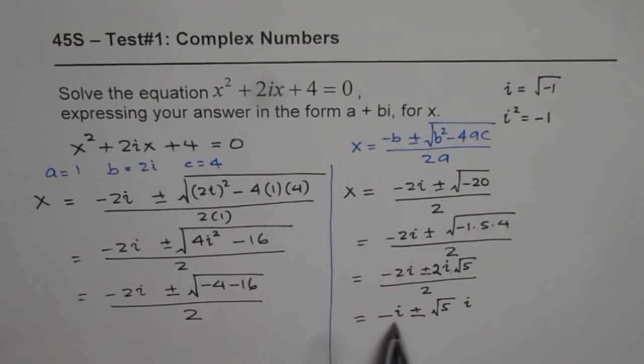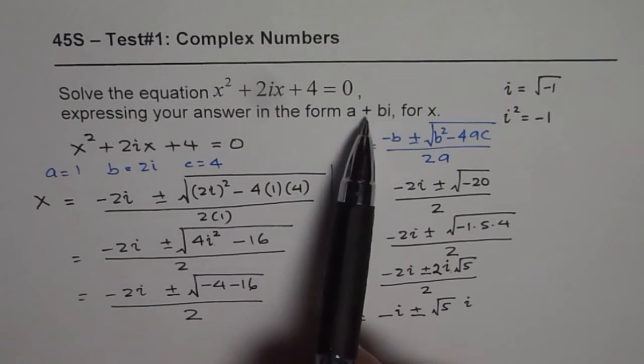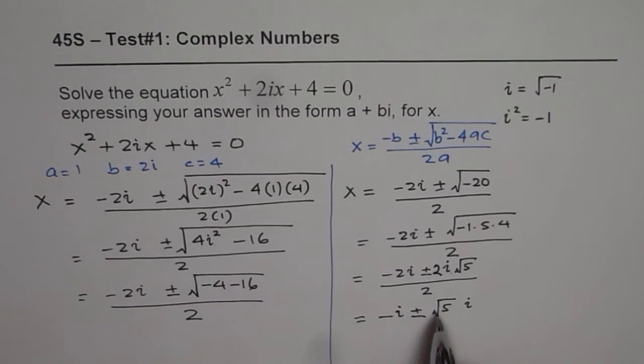Now in this case, we have to write the answer. But we need to express our answer in the form a plus bi. In this particular case, we do not really have a real part. So this is the complex conjugate, complex root. So we have two solutions here.